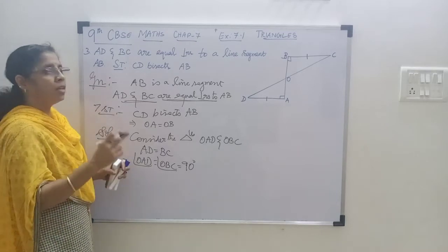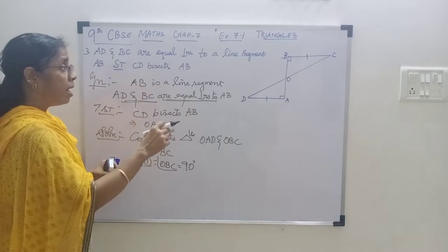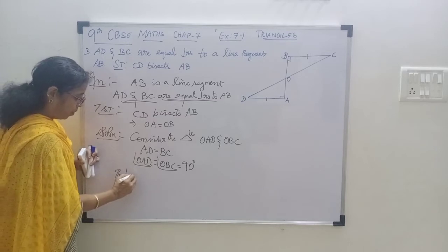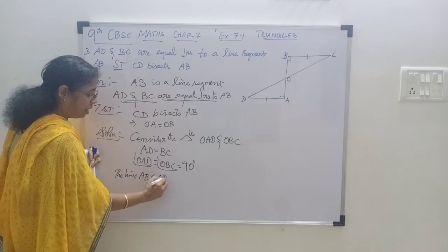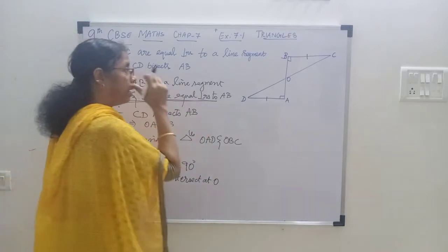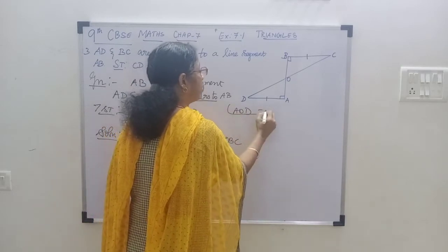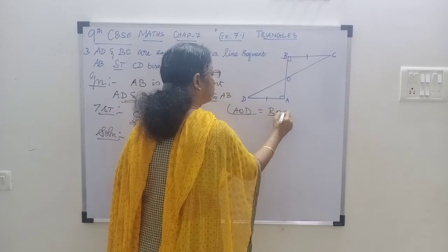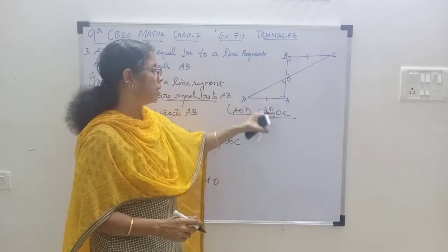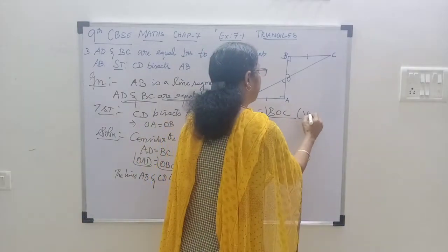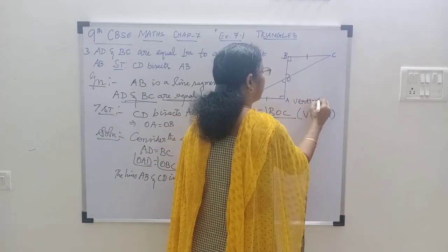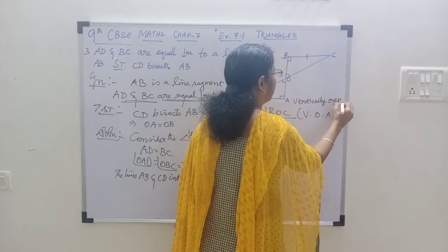The third thing: if two lines intersect — the lines AB and CD intersect at O — then angle AOD is equal to angle BOC. Can you tell me what type of angles these two are? If two lines intersect, they make vertically opposite angles. In short, I wrote it as VOA — vertically opposite angles.